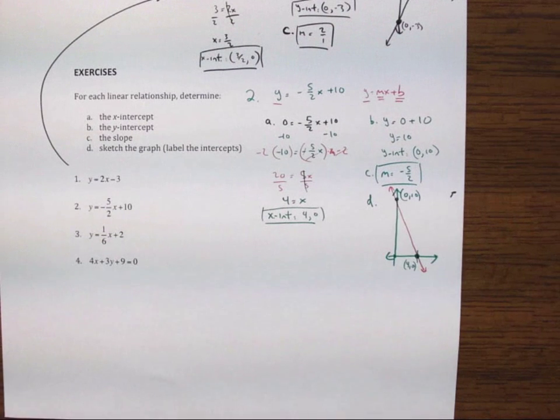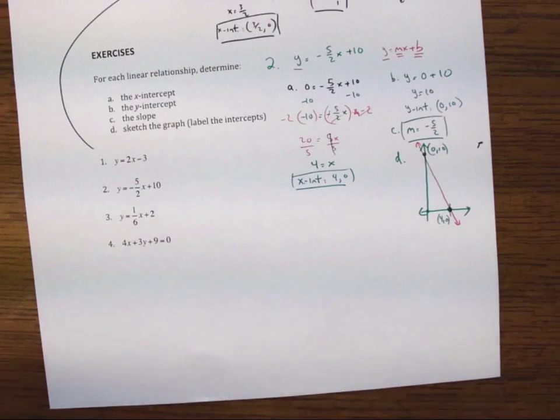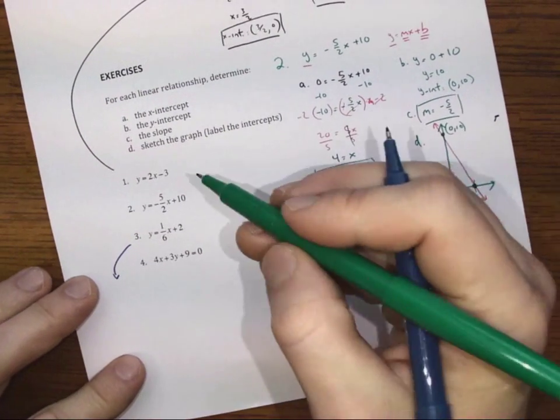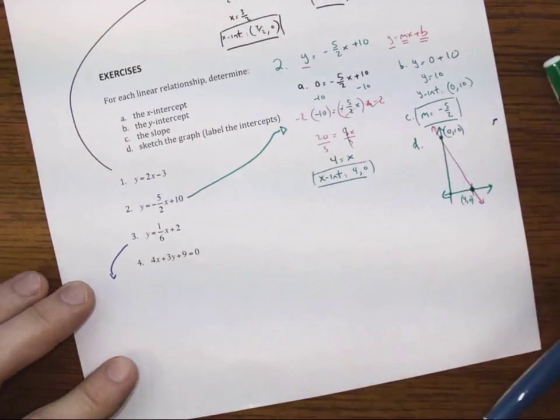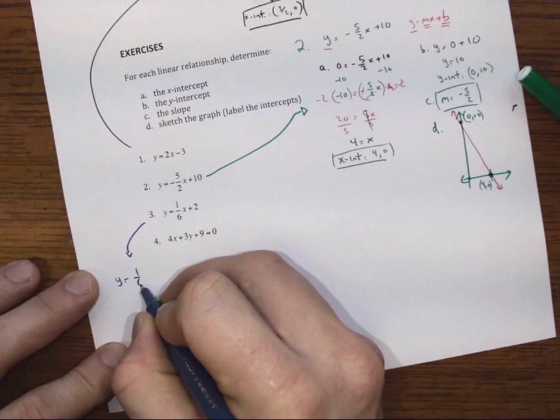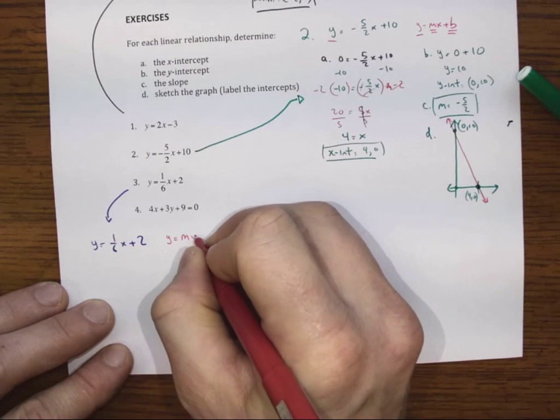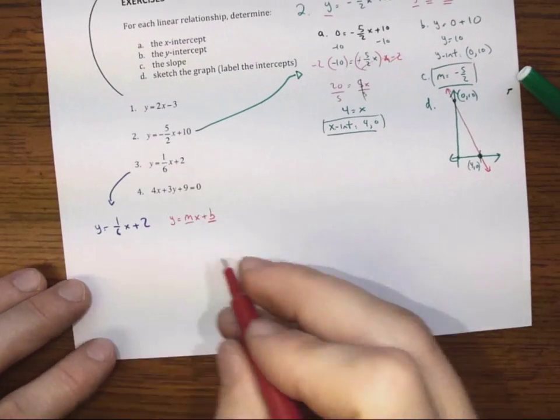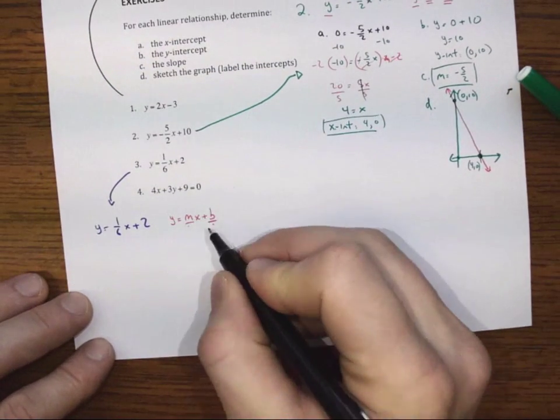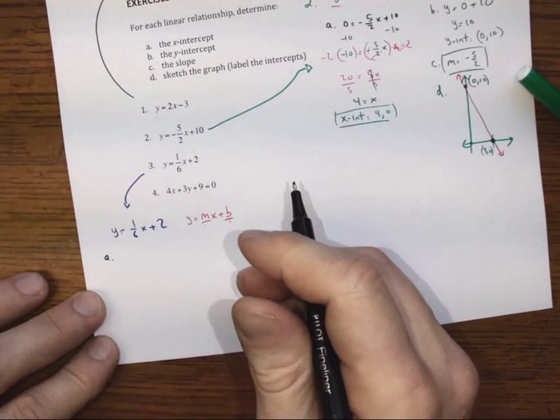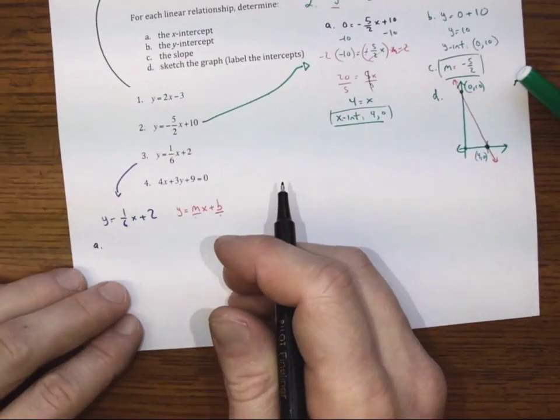Okay. So we'll move on to question 3. So for question 3, we've got the line y equals 1 6th of x plus 2, which, again, is in our form y equals mx plus b. So I know my m and I know my b just by looking, which is to say I know my slope and I know my y-intercept. However, we're going to proceed as if we'd forgotten that. It's good to know multiple ways to get a value.